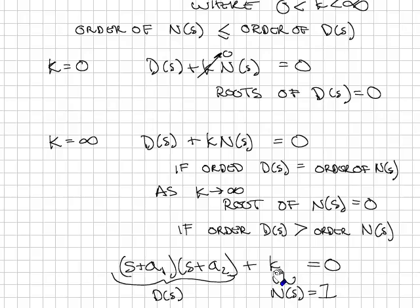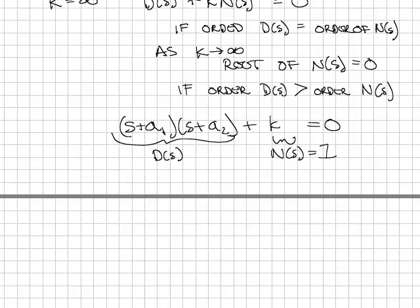And the question is, when k equals infinity, what are the values of s that make this system equal to 0? Let's just brute force this and apply the quadratic formula. So first I'll expand it, and we have s squared plus s times (a1 plus a2) plus a1 a2 plus k equals 0.